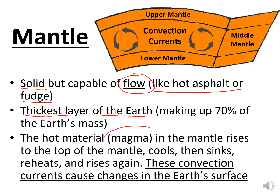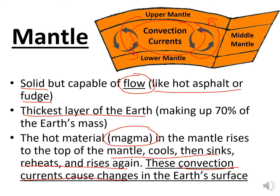The hot material — magma — in the mantle rises to the top, cools and sinks, then reheats and rises again, just like bubbles in a brownie baking in the oven. These are the convection currents located in the middle mantle. The cycle repeats: it cools, goes down, reheats, and comes back up.